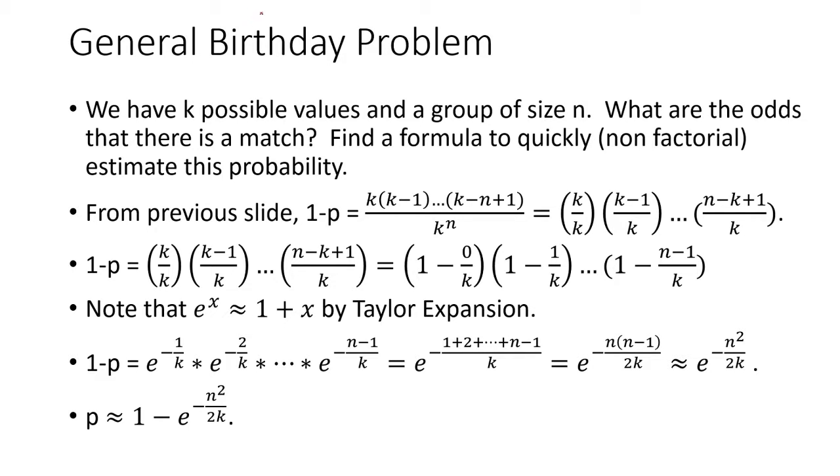So next we're going to move on to the general birthday problem. Now instead of 365, we're going to have k just be an arbitrary variable. So before this was days, but now we're just going to make it k possible values. And we're going to take it out of a group of size n. Remember this was n people from the previous example. So now what are the odds that there's a match? And we're going to quickly find a formula to quickly estimate this probability because permutations and factorials can blow up very quickly. The numbers can get very large. Sometimes it'll overflow the calculator or the computer. So we need to find a quick way to estimate this probability.